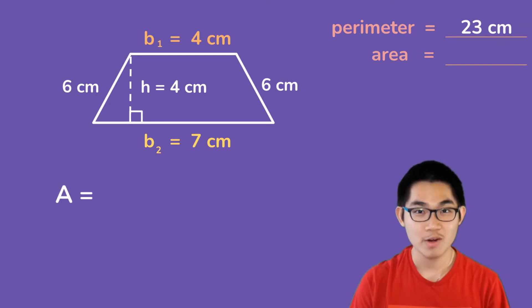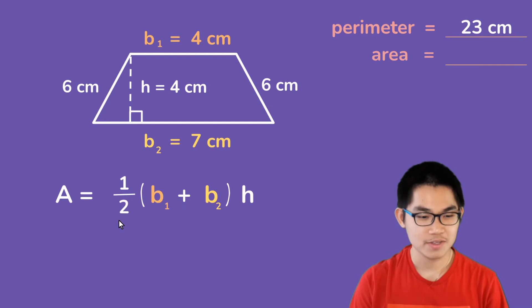Now, how do you find the area of trapezoid? Well, the formula for the area of trapezoid is one-half times the first base, which is this one, plus the second base, which is this side over here, times the height. Now, where does this formula come from? I will explain in a moment, but for now, let's use this formula.